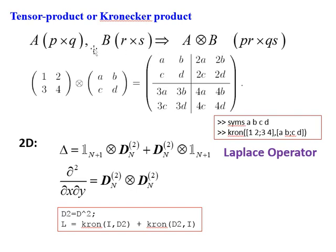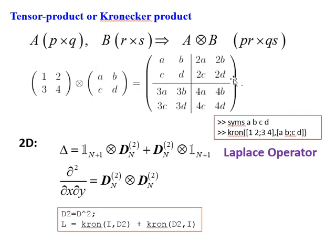If we have a matrix A of size P by Q, the tensor product with another matrix B of size R by S gives a big matrix of size PR by QS. For example, a 2 by 2 tensor product with a 2 by 2 matrix gives a 4 by 4 matrix.